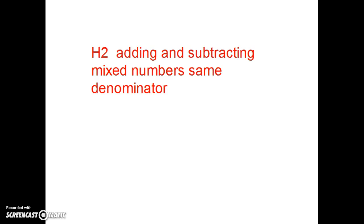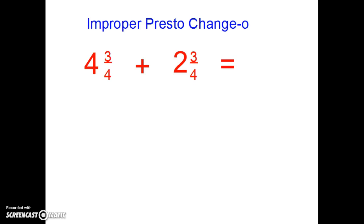This video is going to help you with adding and subtracting mixed numbers with the same denominator. I'm going to show you three methods for adding and for subtracting them. The first one is called improper presto change-o, at least that's what I'm calling it. So what you're going to need to do is change both mixed numbers to an improper fraction. That's what we're doing first.